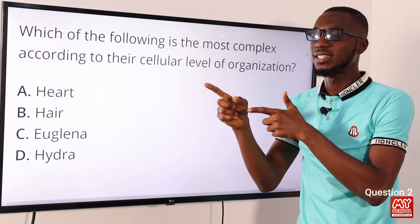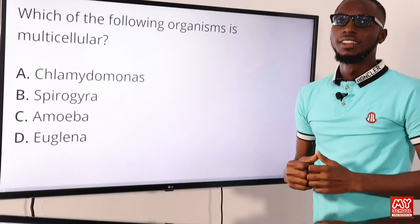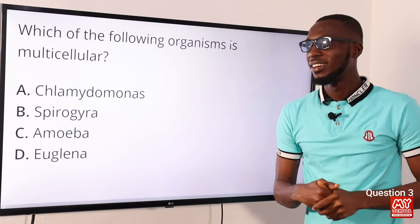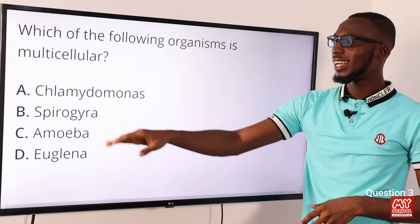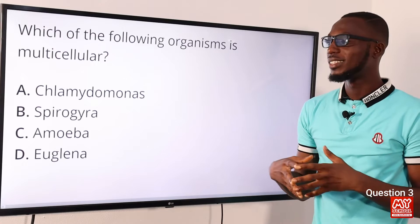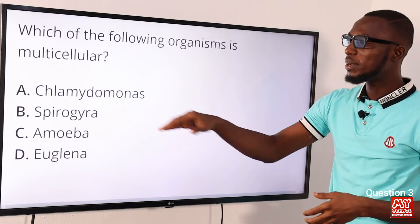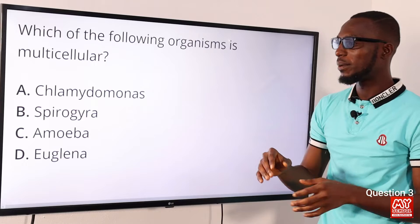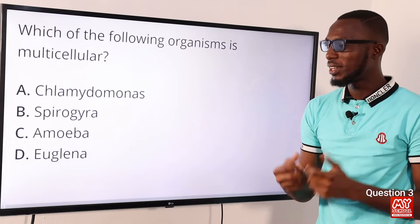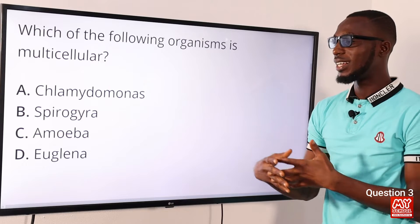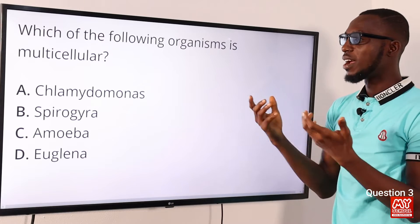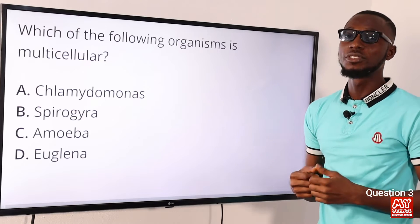Question three: which of the following organisms is multicellular? The correct answer is Spirogyra — a simple multicellular organism that exists as filaments. Chlamydomonas is unicellular and autotrophic. Amoeba is unicellular and heterotrophic. Euglena is unicellular with both plant-like and animal-like characteristics. So the correct option is option B for Spirogyra.